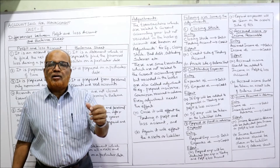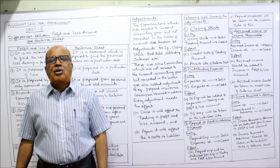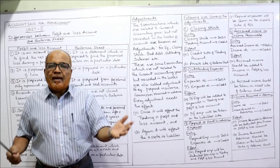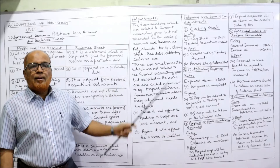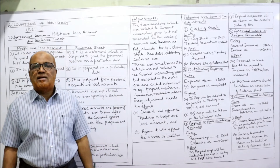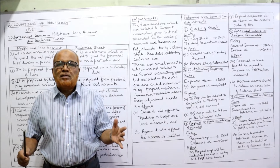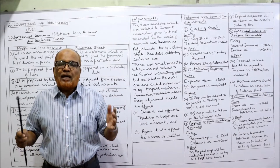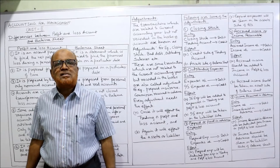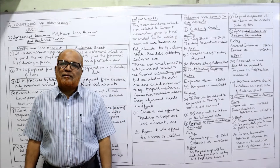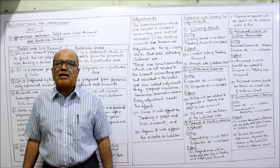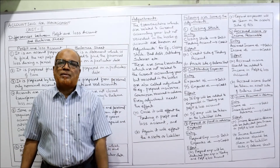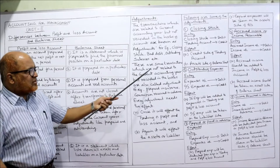Those transactions of the current year that are not recorded in the books of accounts are called adjustments. Examples include: closing stock, bad debts, and outstanding salary. Closing stock was not adjusted in the trial balance, so it needs to be adjusted after making the trial balance. Bad debts are irrecoverable debts — amounts which cannot be recovered from credit customers — requiring an entry for bad debts and provision for bad debts. Outstanding salaries are also current-year items not yet recorded.